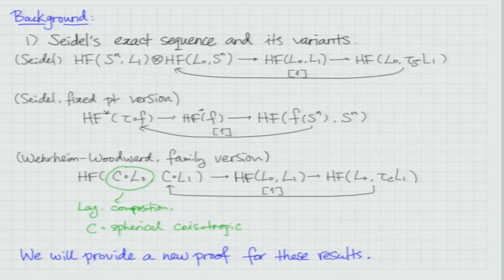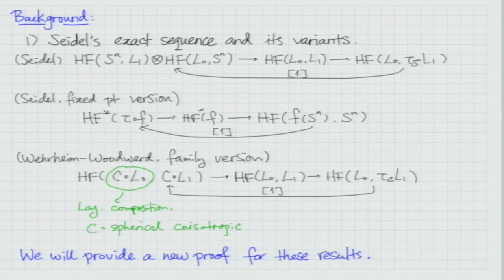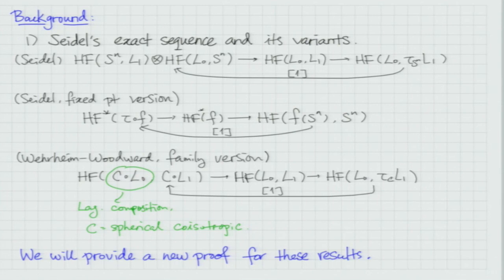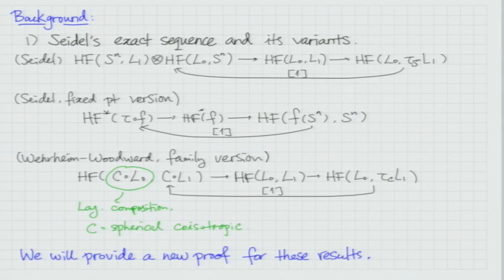We want to talk about exact sequences, and we should mention Seidel's famous result on his exact sequence. Seidel's exact sequence actually has two versions. The most famous one is probably the Lagrangian version: the tensor product of two Floer homologies, using the evaluation map to map to the Floer homology of L0, L1, and then you have the mapping cone — the Floer homology of L0 and the Dehn twist along a Lagrangian S^n of L1.